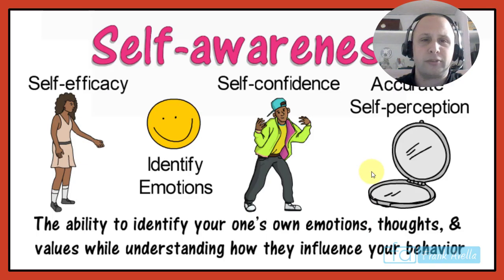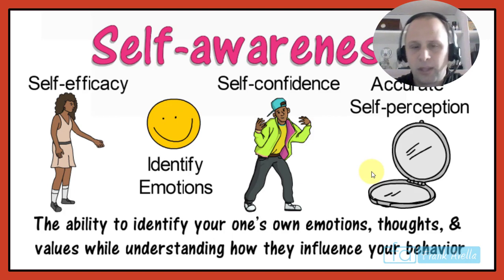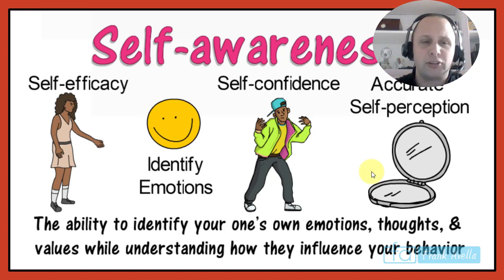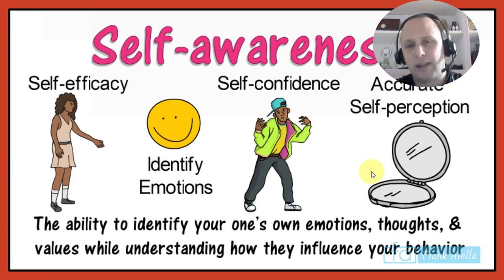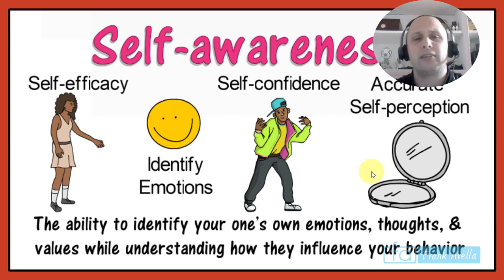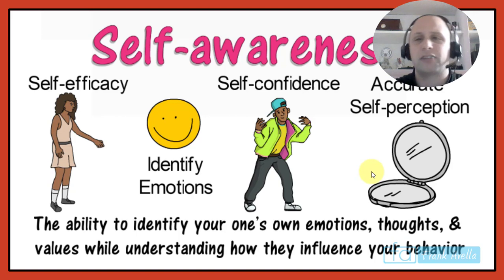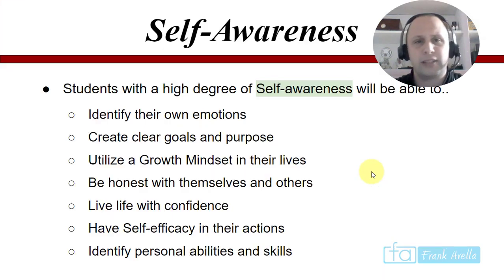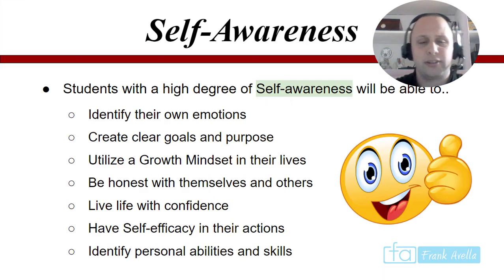Let's jump in with the first competency: self-awareness — the ability to identify your own emotions, thoughts, and values while understanding how they influence behavior. The components include self-efficacy, identifying emotions, self-confidence, and accurate self-perception.